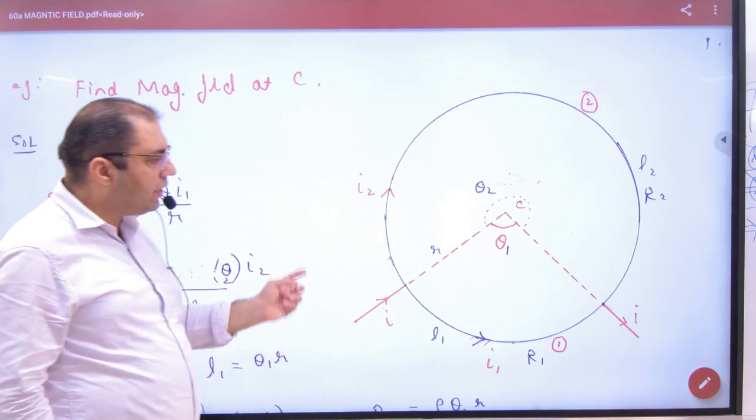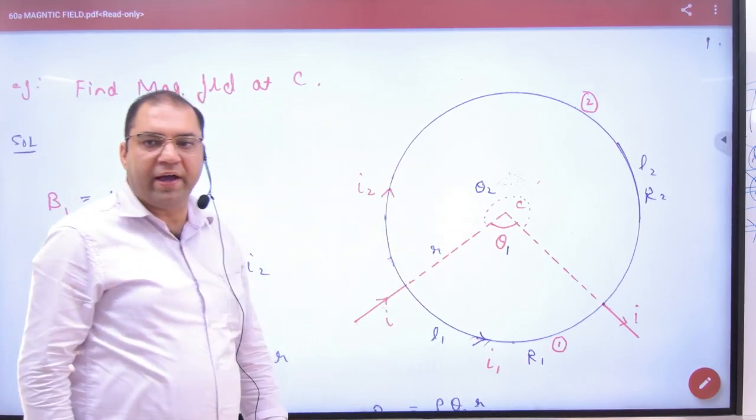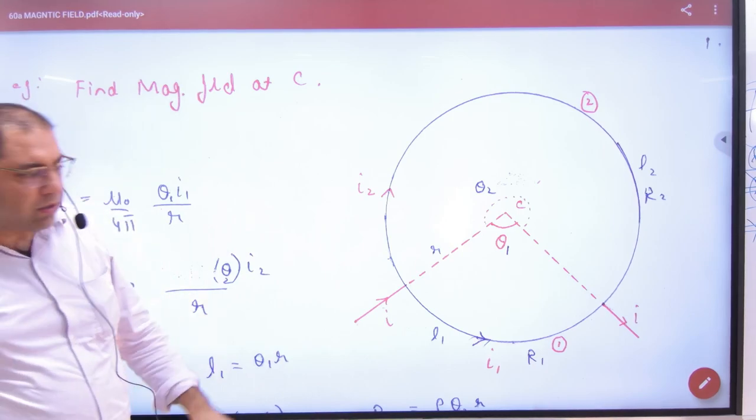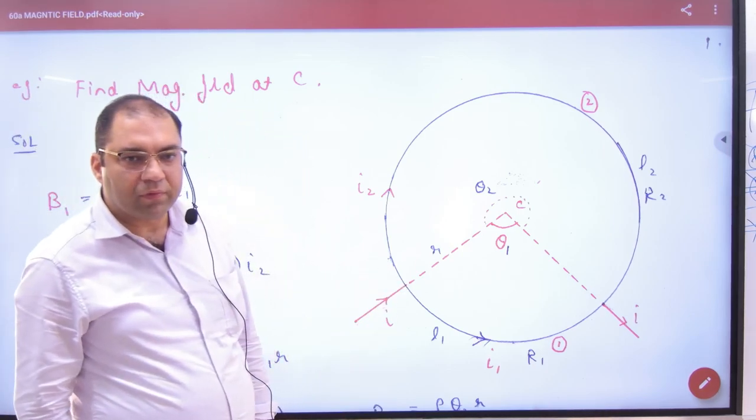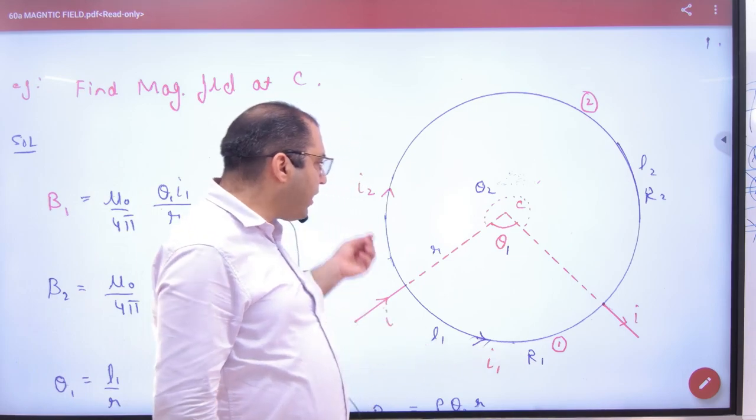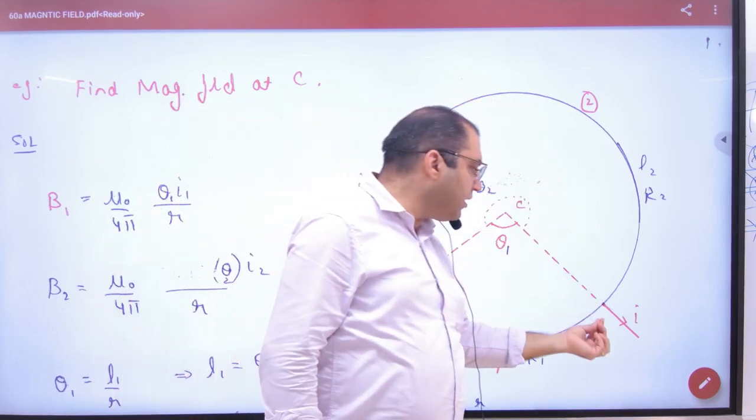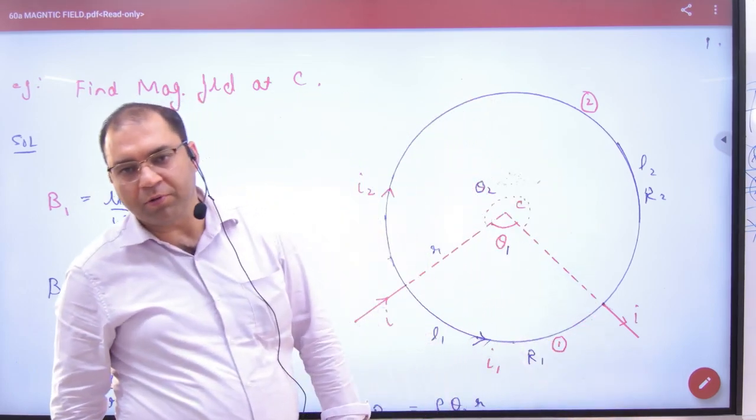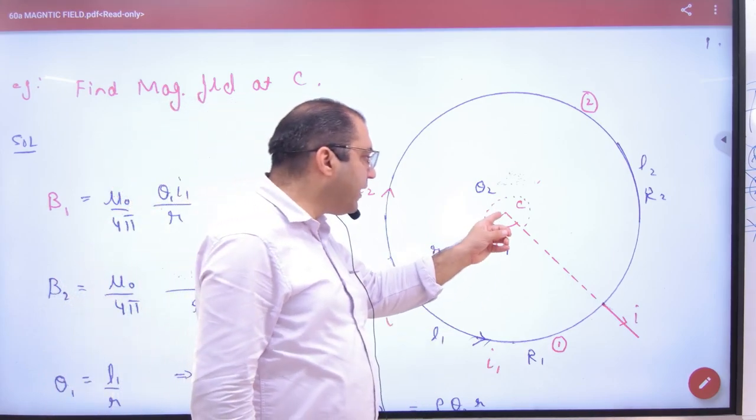The question is, there is a wire in front of you. This wire's resistance is R. Current enters I. And then I divide R1 I2. And then I get out of here I. Let me tell you, what will happen in the magnetic field center?